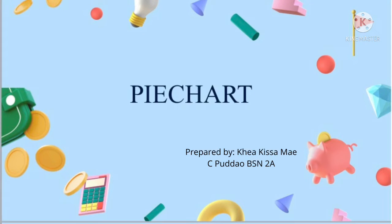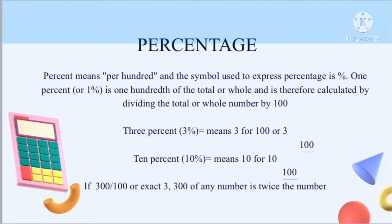So for today's video, we have here a pie chart and we are going to tackle percentage. Percentage means per hundred and the symbol used to express percentage is the % symbol. 1% means 1 per 100 of the total or whole, and is therefore calculated by dividing the part by 100. For example, 3% means 3 for every 100, and 10% means 10 over 100.